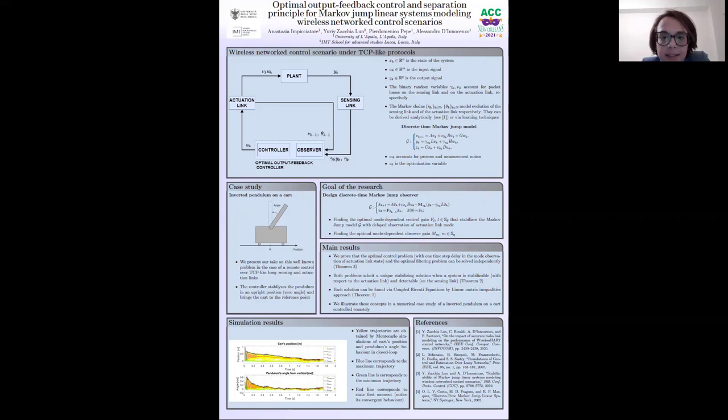I'd like to point out that the output feedback controller is aware of the modes and of packet losses occurring on the links, but as far as actuation link is concerned, this information is affected by one time step delay. We model the overall system using the discrete time Markov-jump model and our goal is to design a discrete time Markov-jump observer with an optimal mode dependent control gain accounting for a one time step delay in the actuator link mode observation. This is the main difference with respect to the previous literature and of course we aim to obtain an optimal mode dependent filtering gain so that we can develop a separation principle.